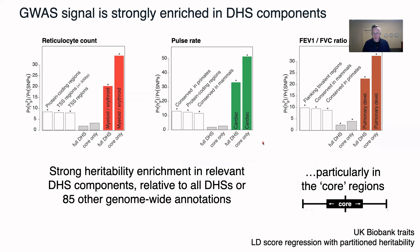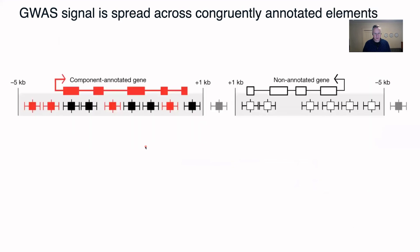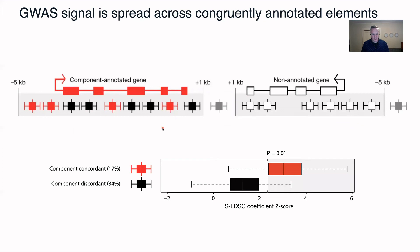Even though these elements, when annotated in the right component, show much stronger enrichment for relevant genetic signal, we were still wondering what that would mean for the regulatory landscape around genes. We combined these two approaches and asked: given a gene and its DHS landscape around it, would there be a higher amount of genetic signal captured in DHSs annotated congruently with the gene's annotation, as opposed to DHSs annotated in a different component? This turns out to be quite strongly the case, even when compared to intergenic or genic control regions.